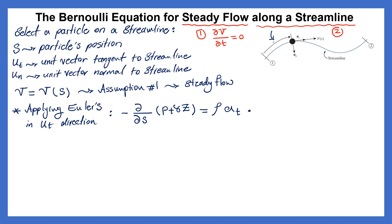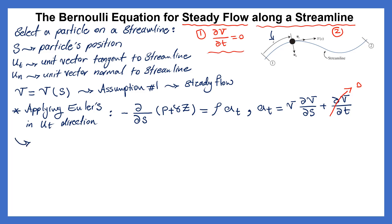We know how to find acceleration in the T direction — it is velocity times the change of velocity over space, plus the change of velocity over time. Based on assumption number one, steady flow, the second term (change of velocity over time) is equal to zero. So I substitute the expression for acceleration into Euler's equation and rewrite it.